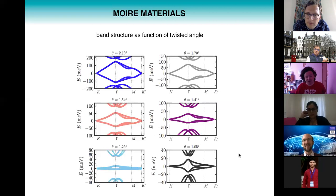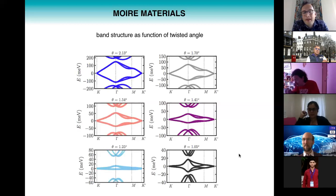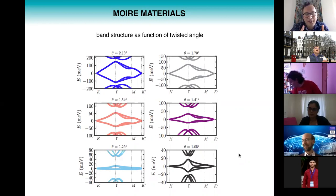It's remarkable how similar the band structures look across different twist angles even though the scales are very different from the original graphene. The nature of the magic angle is also discussed: the hand-wavy explanation of competing energy scales gives a decent estimate of the first magic angle. A question about the origin: is it due to some sort of destructive interference? The answer is that hand-wavy arguments are quite limited in predictive power when it comes to explaining why there are multiple magic angles.